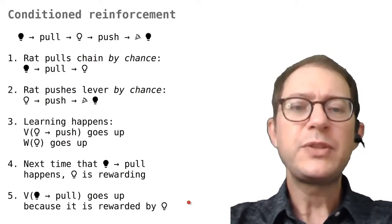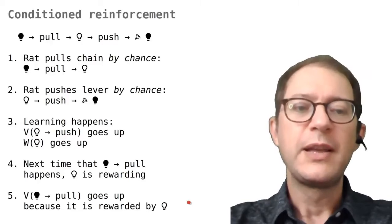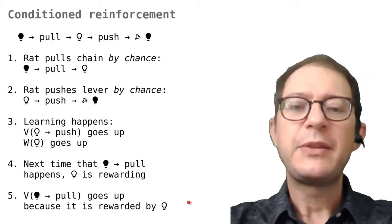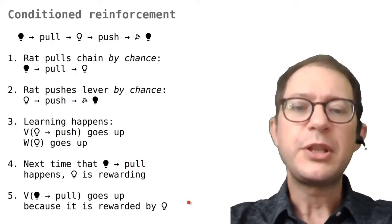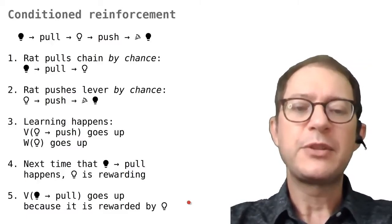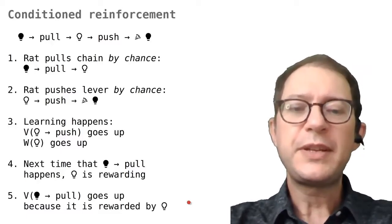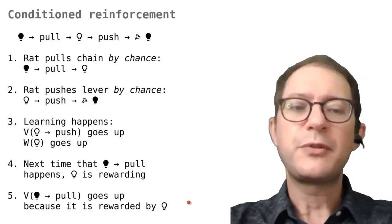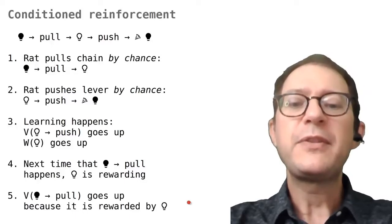So we can see that using conditioned reinforcement, the rat can learn an action that is necessary to get a reward later on but is not itself rewarding. The conditioned reinforcement works as a virtual value that informs the rat that it is doing something right — something that will be valuable later on. This learning will need some repetition because both V and W values change slowly, but eventually the rat can learn the sequence. With this strategy, the rat doesn't need to reason; the conditioned reinforcement mechanism does the work of reasoning by carrying information about the eventual value of actions even when there is no immediate value.